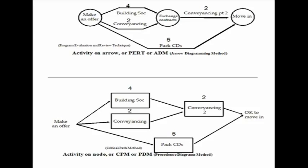With CPM, the arrows don't take any time. They just say what depends on what — what has to precede what. And with CPM, you draw the activities as rectangles.